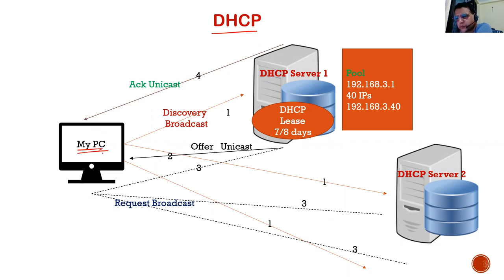When I start my computer, I have two ways to assign an IP address. One is a static IP — I go to Network Settings, Network and Sharing, right-click IPv4, go to Properties, and force a static IP address. But sometimes if I have a lot of computers in my network, I want all the IP addresses to be managed by my DHCP server. Let's assume I am using DHCP.